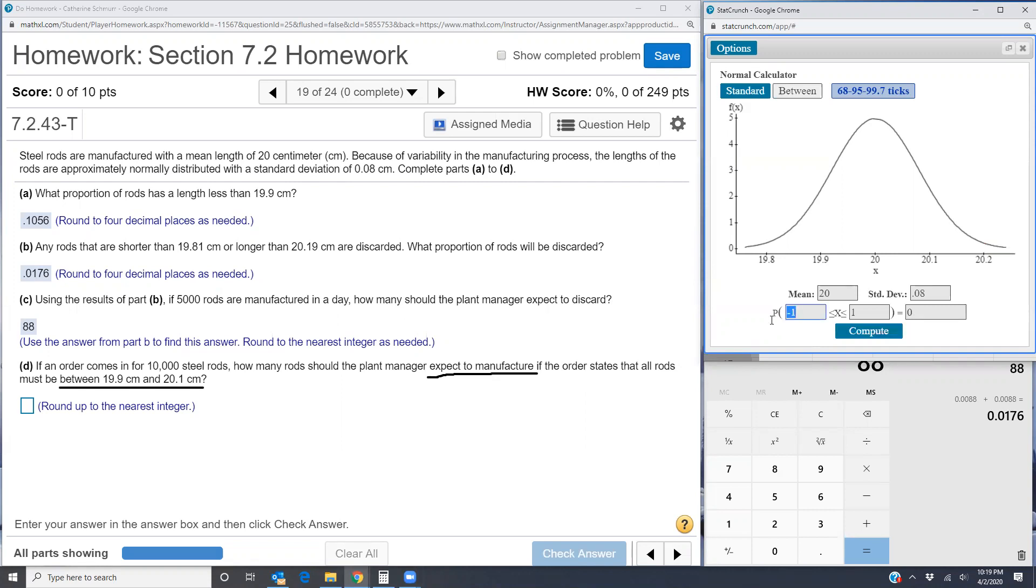My mean and standard deviation have not changed. I get 19.9 and 20.1. So the proportion that are between 19.9 and 20.1 is 0.7887. I'm going to write that down, 0.7887.